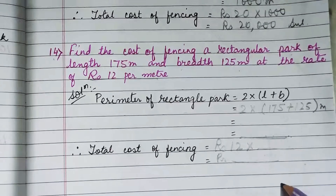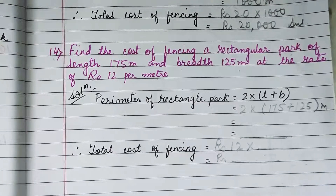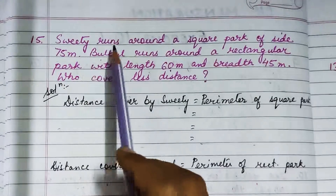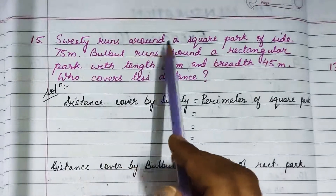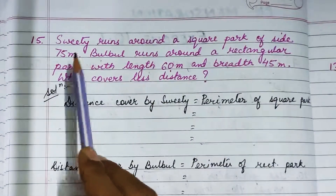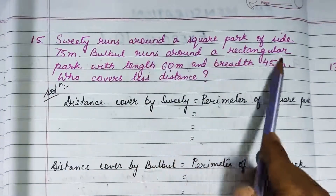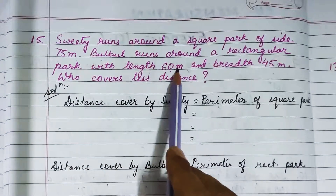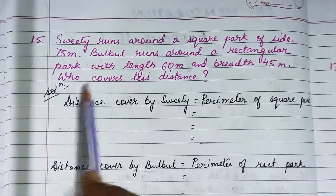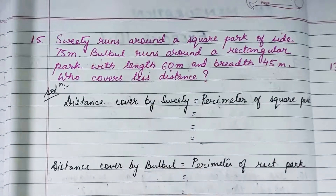This calculation you are going to do by yourself. Now let's move to question number 15. It says: Sweety runs around a square park of side 75 meters. Bulbul runs around a rectangular park with length 60 meters and breadth 45 meters. Who covers less distance?